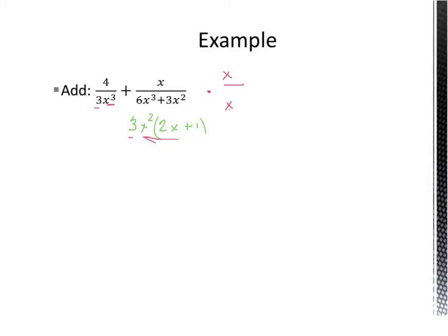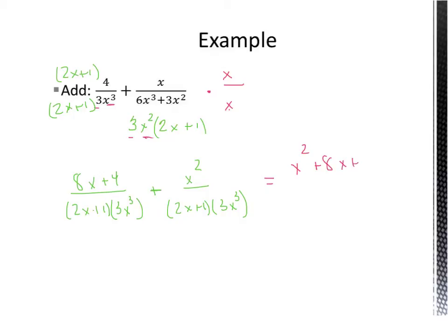I have this 2x plus 1 that's only on the right. So the left-hand side needs a 2x plus 1. Our left-hand side is going to be 8x plus 4, because you're multiplying 4 times that whole binomial, over 2x plus 1 times 3x cubed, plus on the right-hand side, we have x squared over 2x plus 1 and then 3x cubed. Now they have a common denominator. We add the tops, and I'm going to write it in descending order.